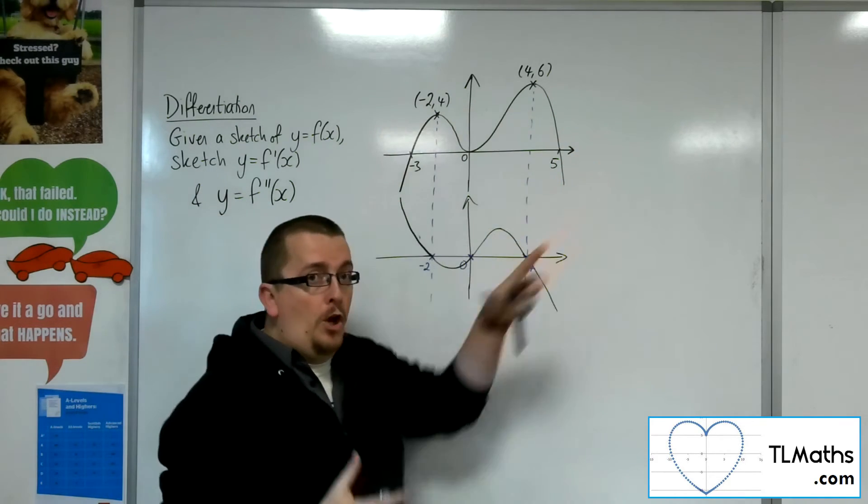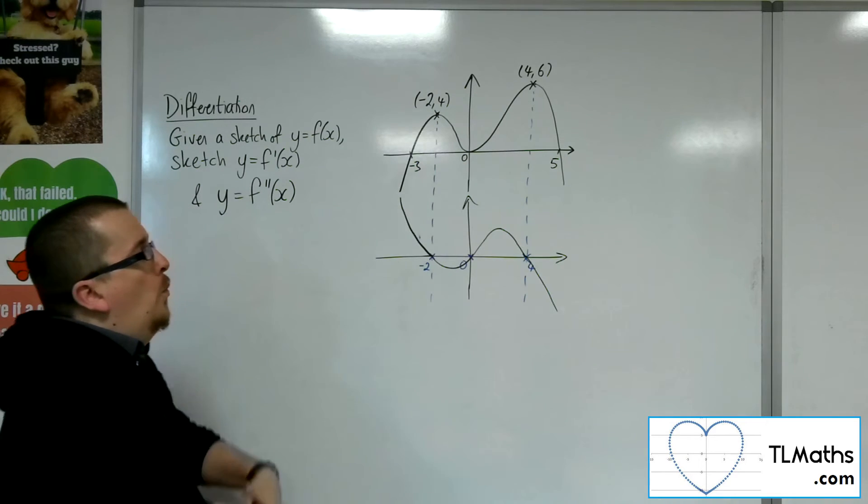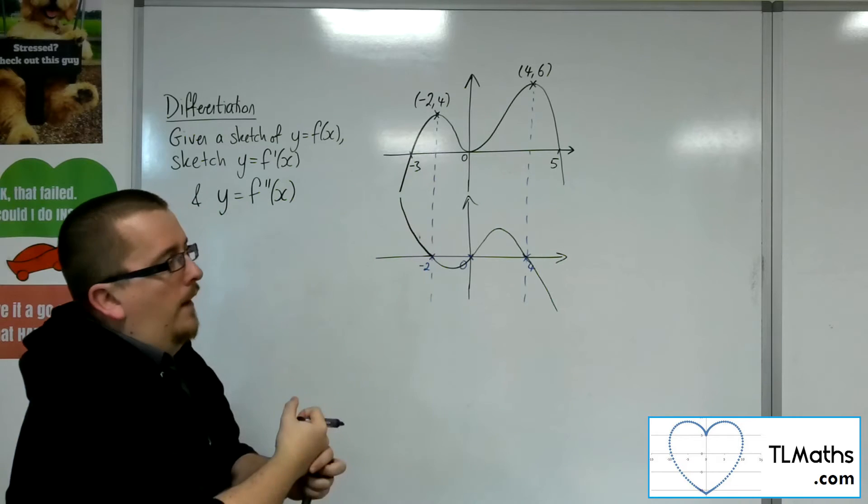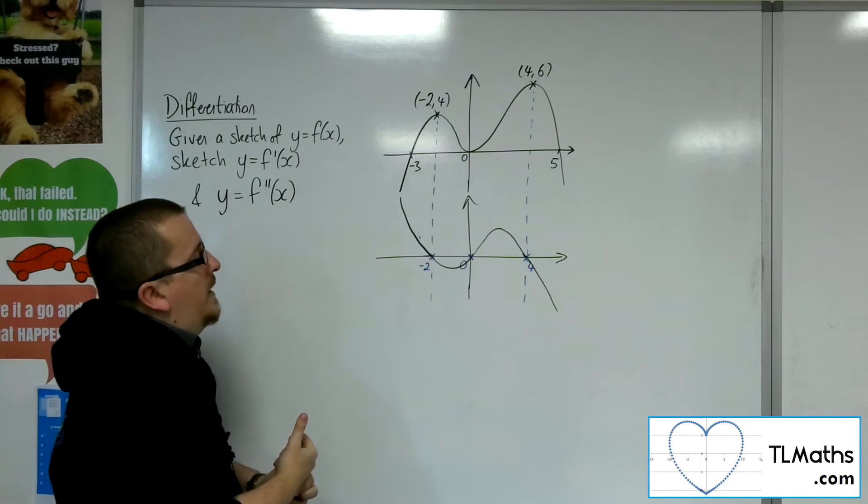So this quartic-esque looking graph, when you're drawing the gradient function, becomes a cubic-esque graph. And that's no coincidence.